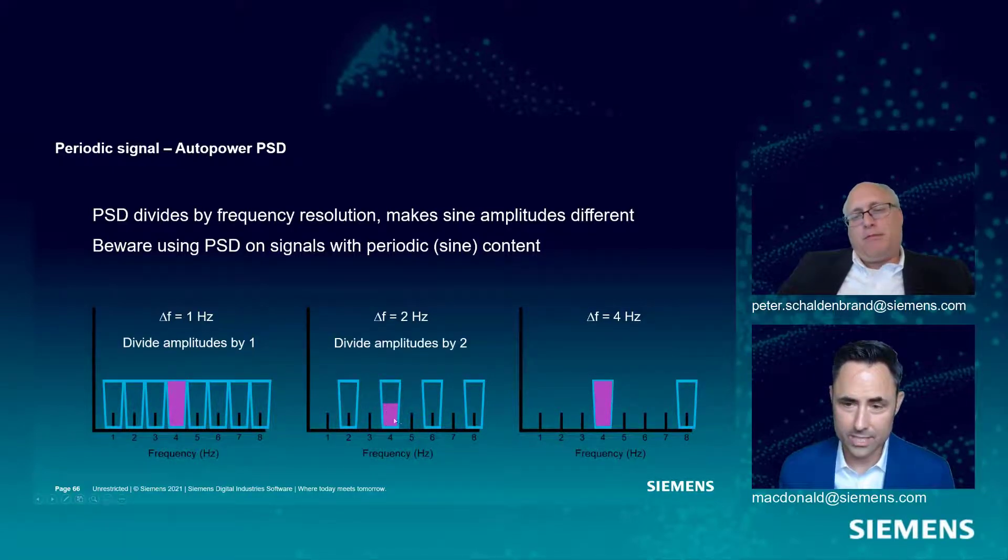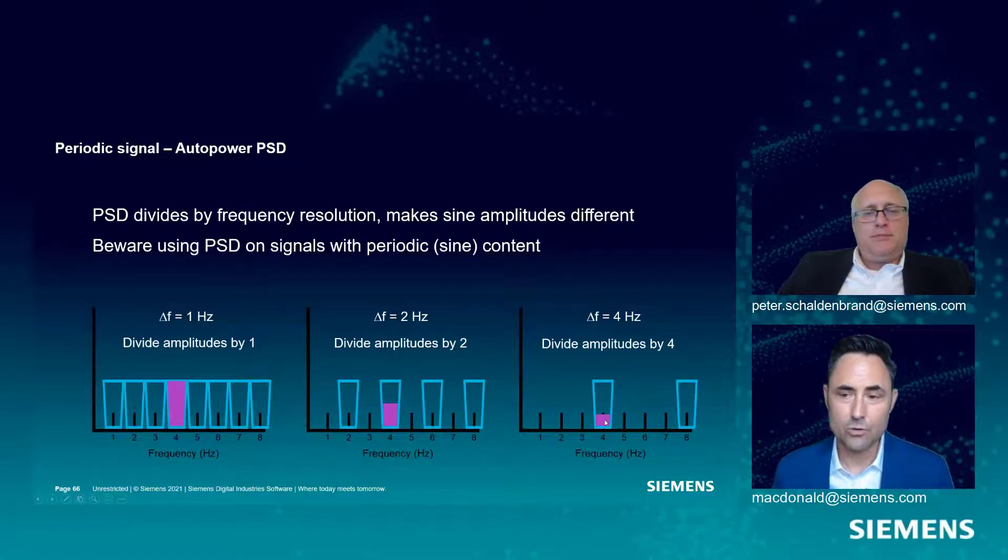So we've just introduced an error. And then this delta F of four hertz, we're going to divide by four. And we're going to introduce an amplitude error. So PSDs can screw up your amplitude if you have mostly a sinusoidal signal.